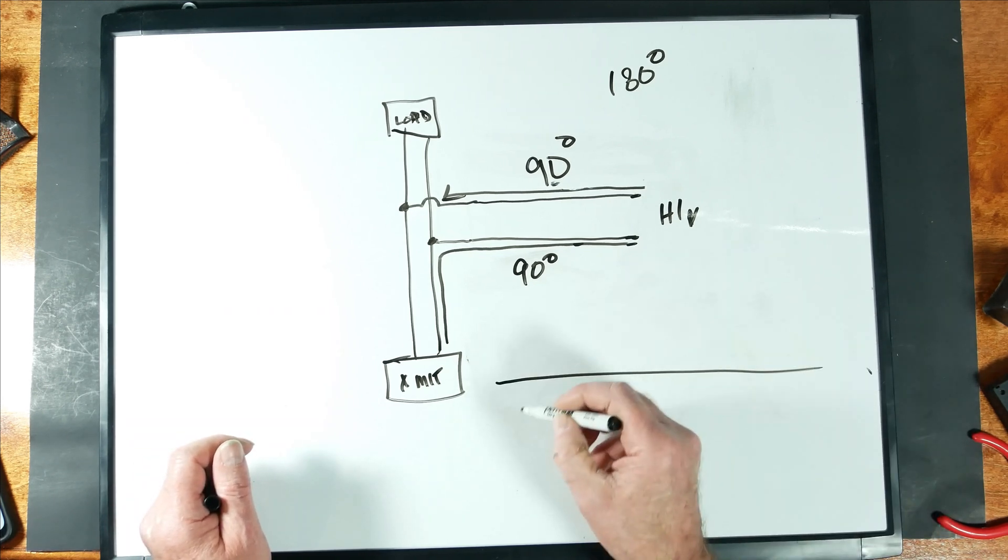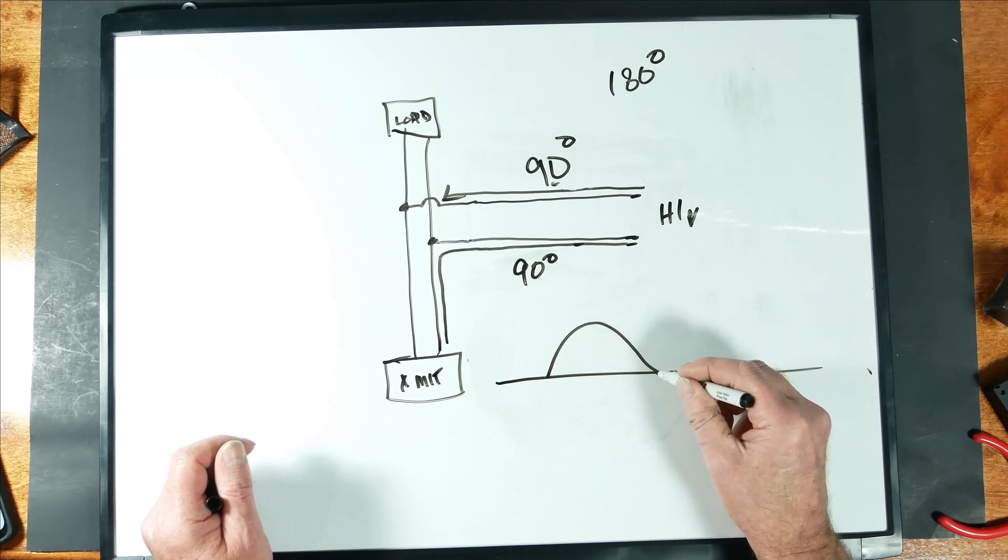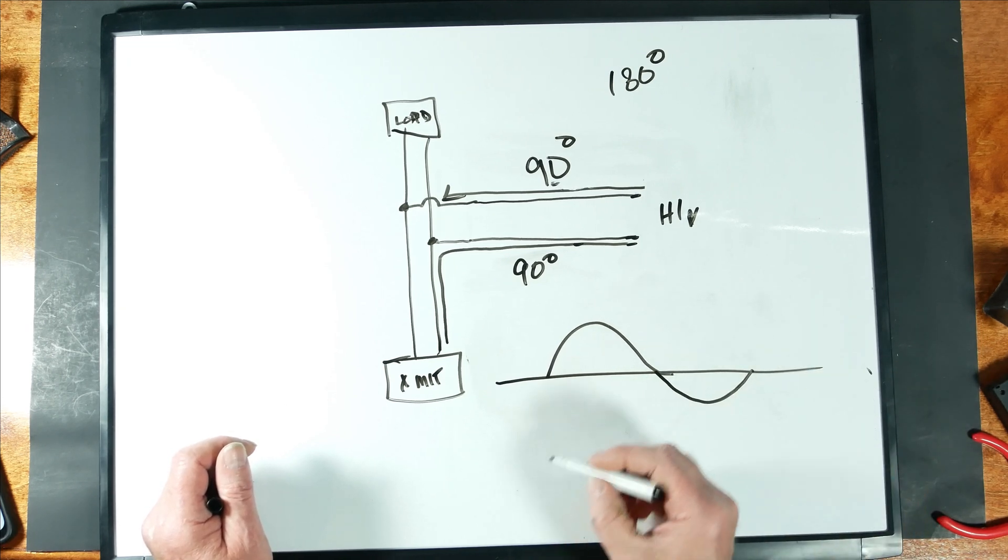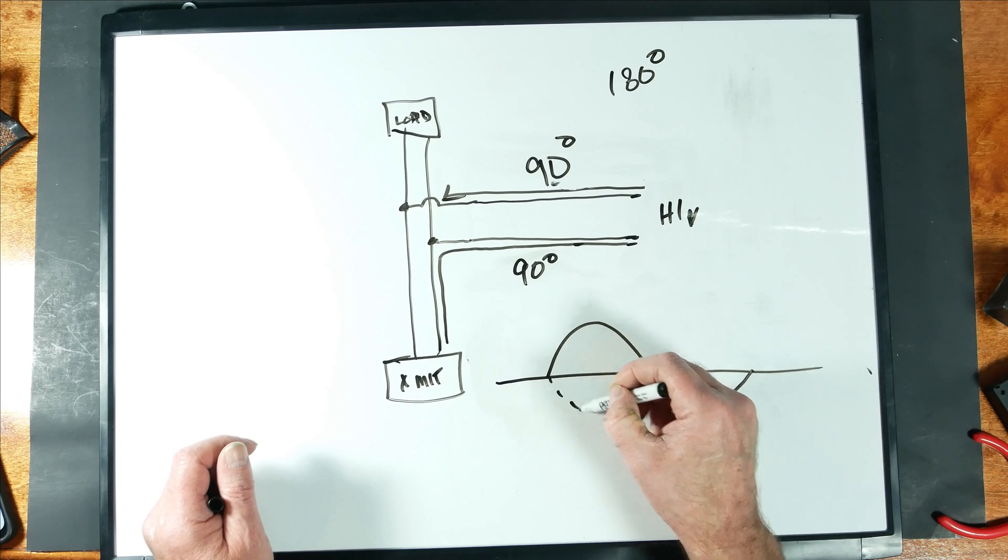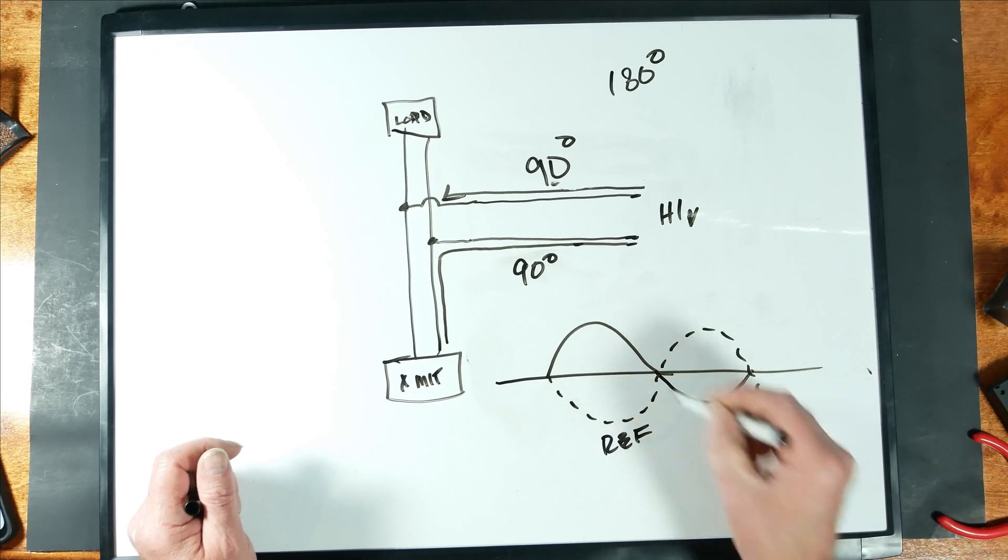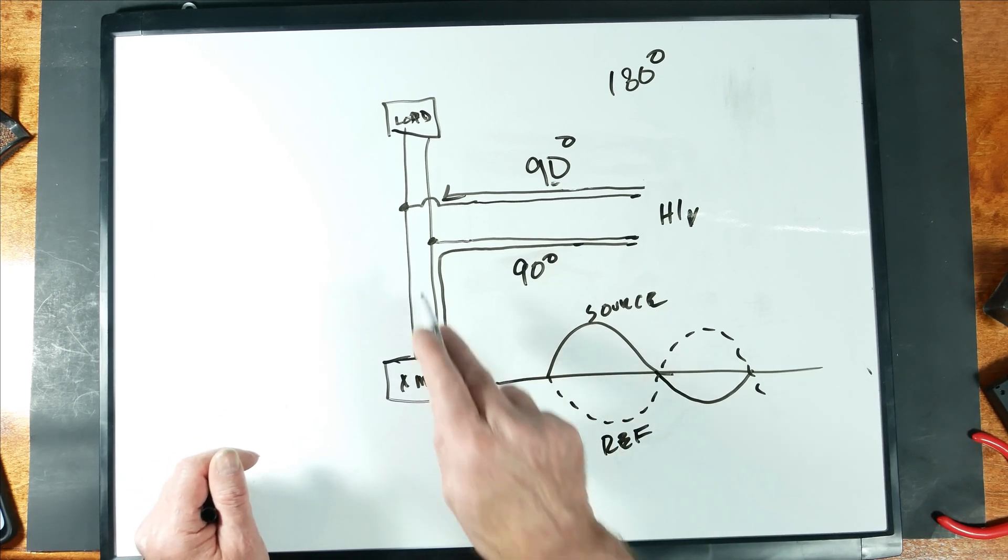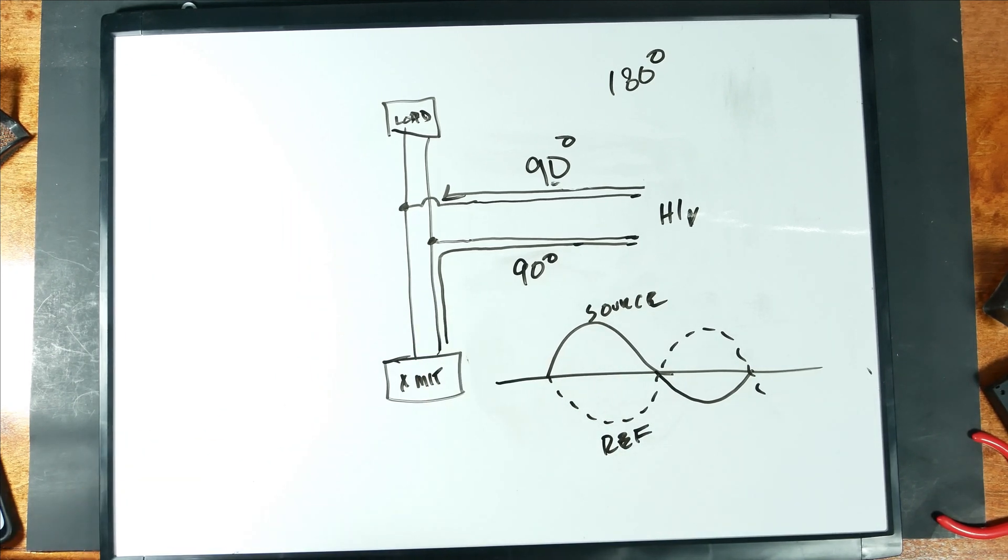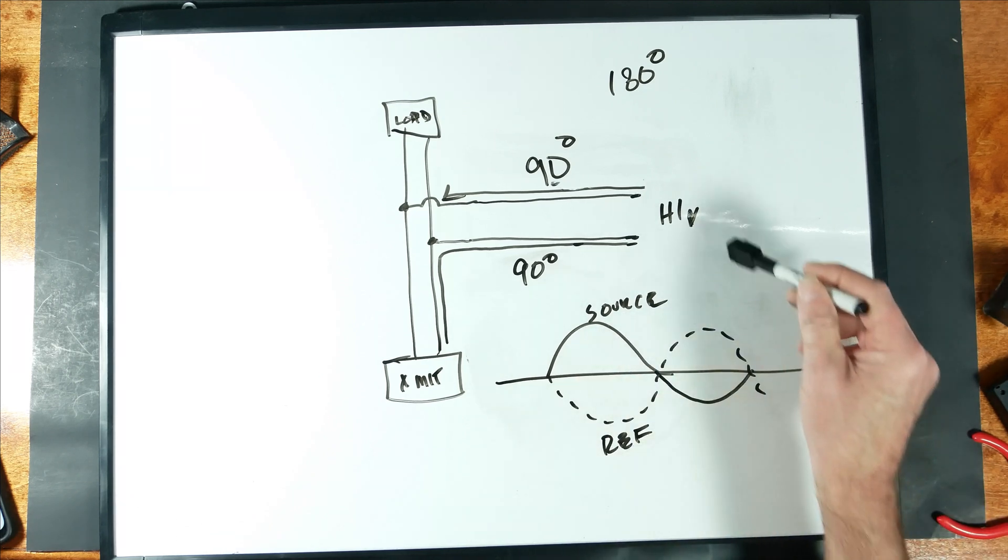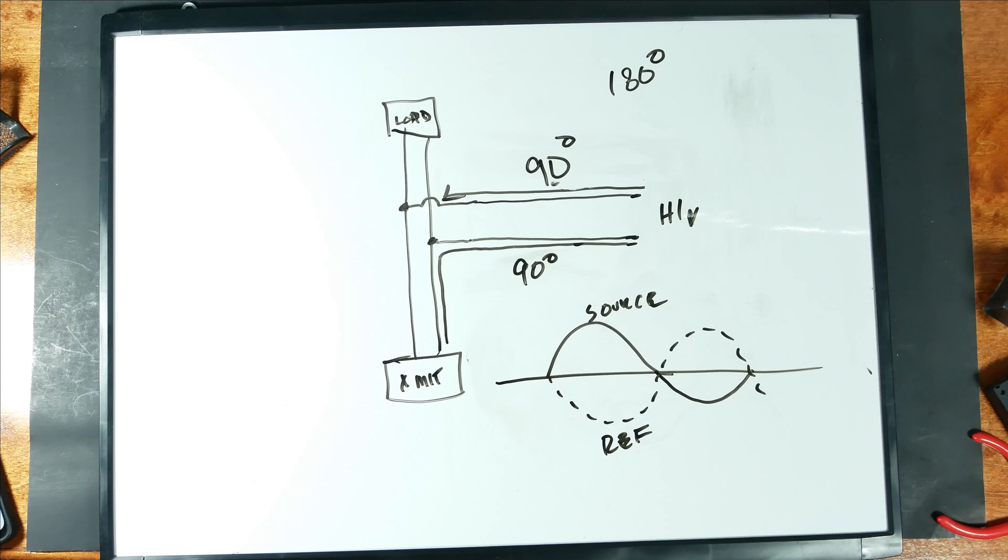And 180-degree shift would end up looking like this. Our reflected wave cancels our source. So this would be a dead short at the transmitter if we did this. No RF would pass an open stub if the transmitter was transmitting on the frequency that the stub was tuned to. So stubs could be used as filters.